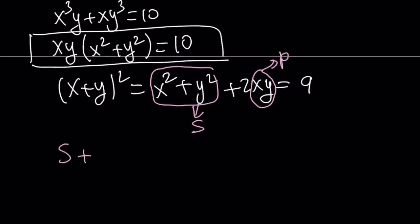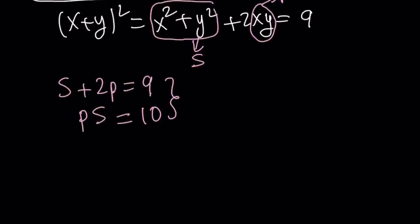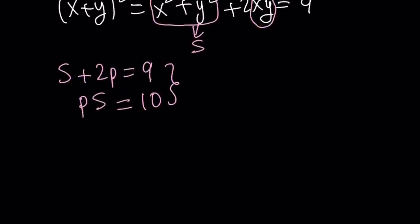I do need another equation to solve for s and p. But if you look at the second equation right here, that gives us what we need. It is p times s, right? p times s or ps = 10. So now we got a system which we can easily solve by substitution.